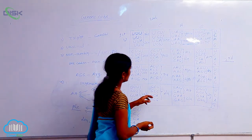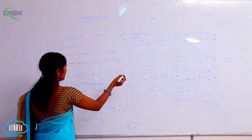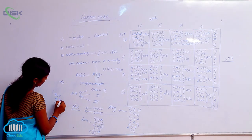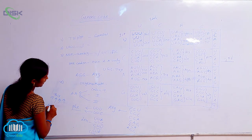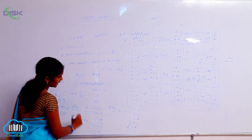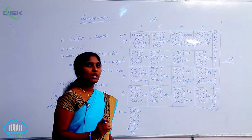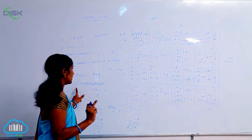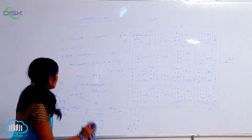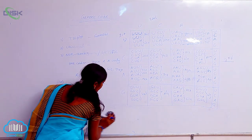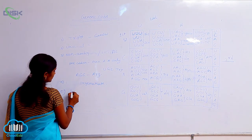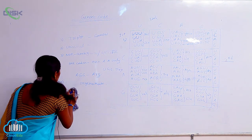Threonine is coded by four codons: ACU, ACC, ACA, and ACG. So one amino acid coded by more than one codon — that character is called degeneracy. The next property of the genetic codon is that it should be linear, meaning while writing the codons they are in a linear sequence.